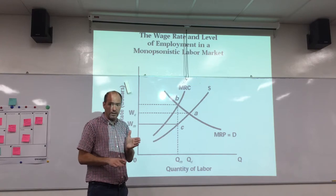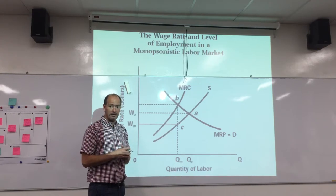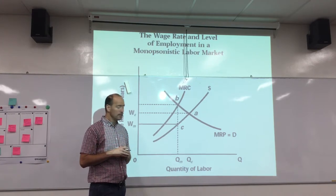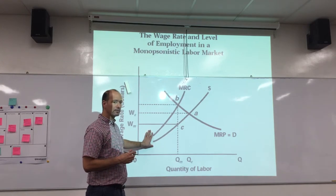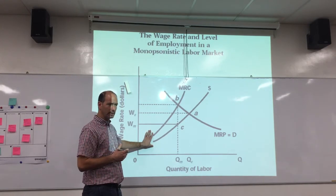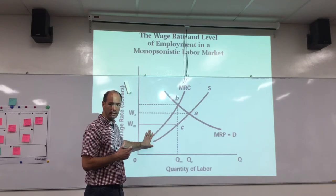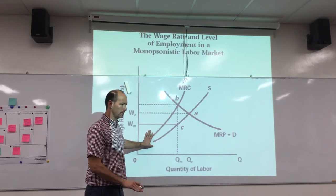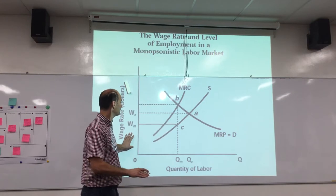And so the firm has a little bit of power in terms of setting the wage. If they're rational, they'll try to pay workers as little as possible while still being able to employ them. So what we see in monopsony is the amount of labor hired is restricted — less than in the perfectly competitive situation — and the wage is lower.